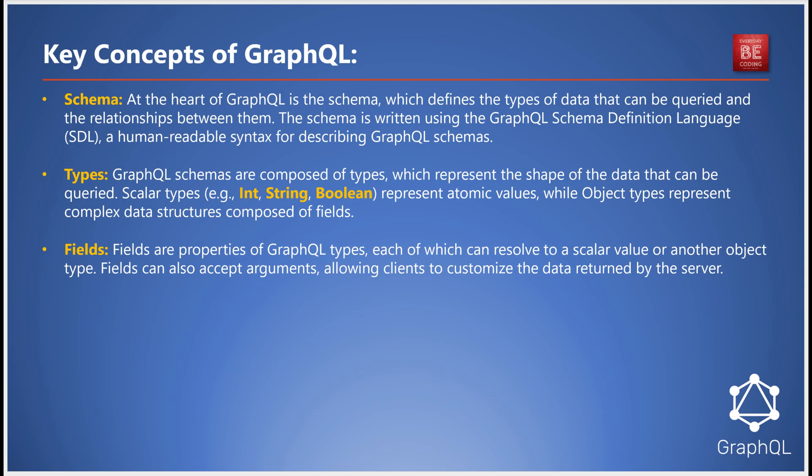At the core of GraphQL is the schema. This is not just any schema — it's a blueprint of the types of data you can query. Written in the GraphQL schema definition language, or SDL, the schema is both robust and readable, making it a developer's delight.